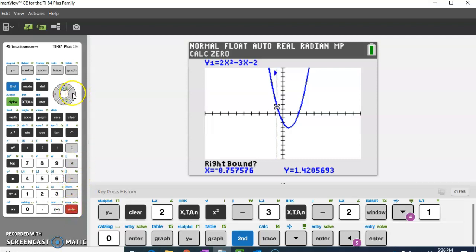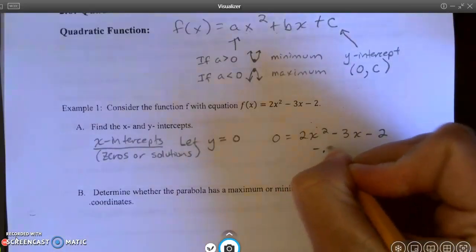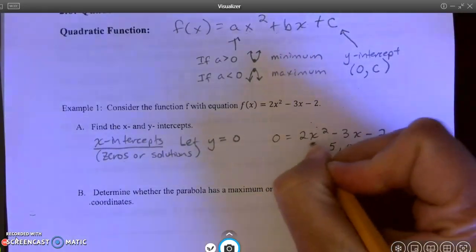Then I'm going to arrow to the right, and I'm going to be to the right, and in this instance below, and I hit enter. I don't want the guess. The guess is not the answer. And I hit enter again. And it gives me the zero, -0.50. So one of my zeros is -0.50.